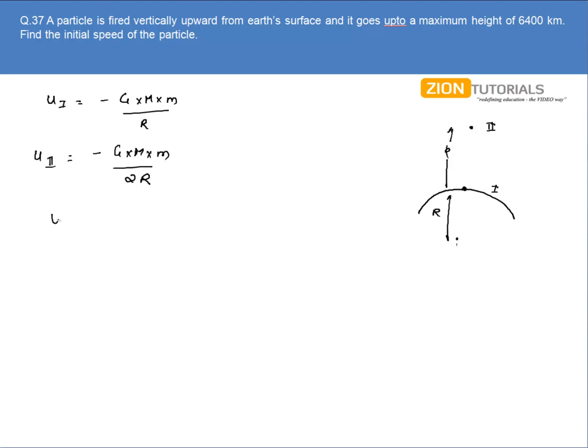I can write U1 plus kinetic energy equals U2. So I have minus GMm by R plus kinetic energy equals minus GMm by 2R. The kinetic energy comes out to be GMm by 2R.